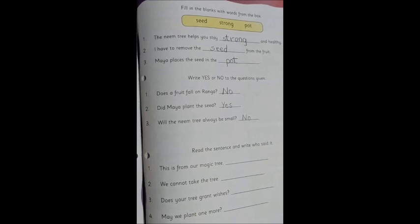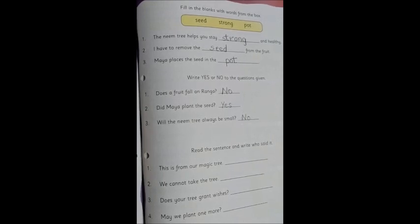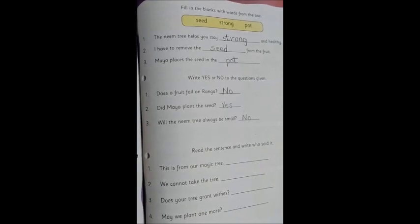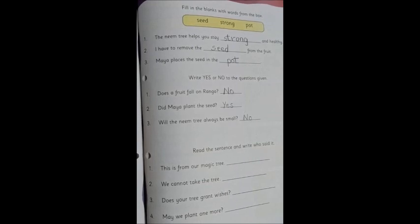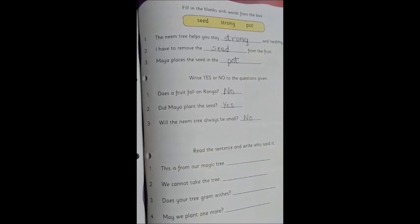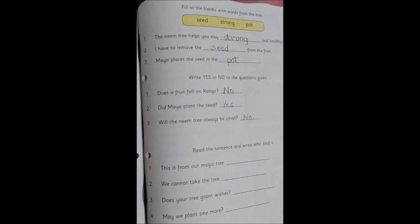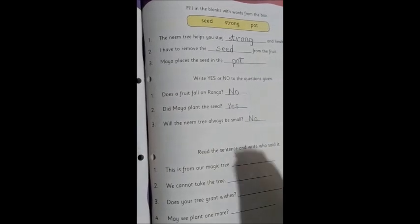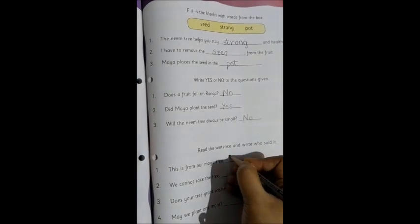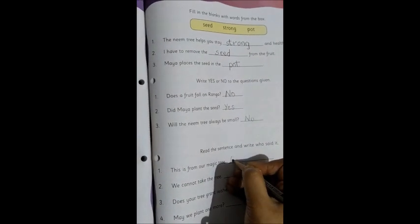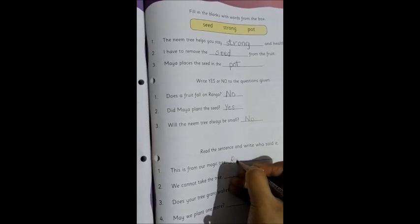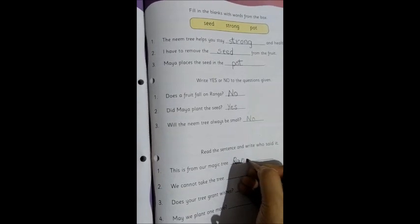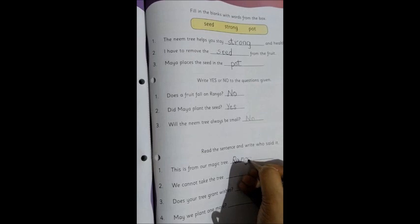So now moving on to the last segment. Read the sentences and write who said it. So we will have to tell from the story who said this sentence. This is from a magic tree. Yes, this is from a magic tree. Who said this? Ranga. So we will write the spelling Ranga. R, name of a person so it will be capital. Ranga, R-A-N-G-A, Ranga.